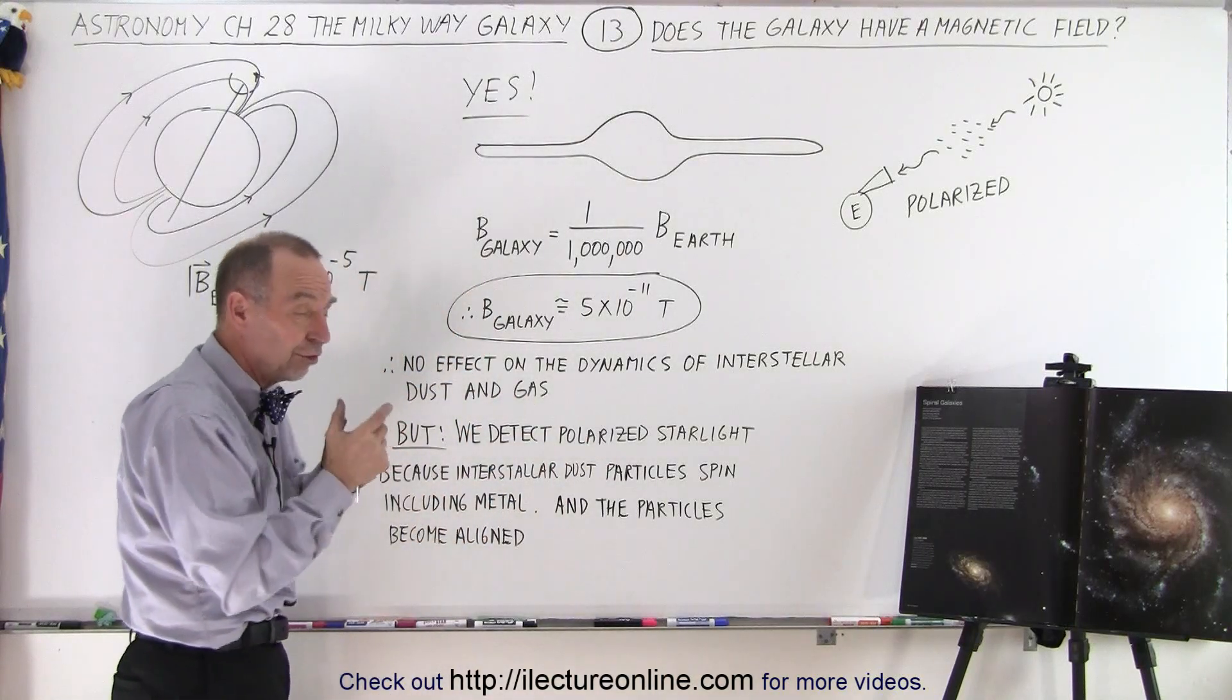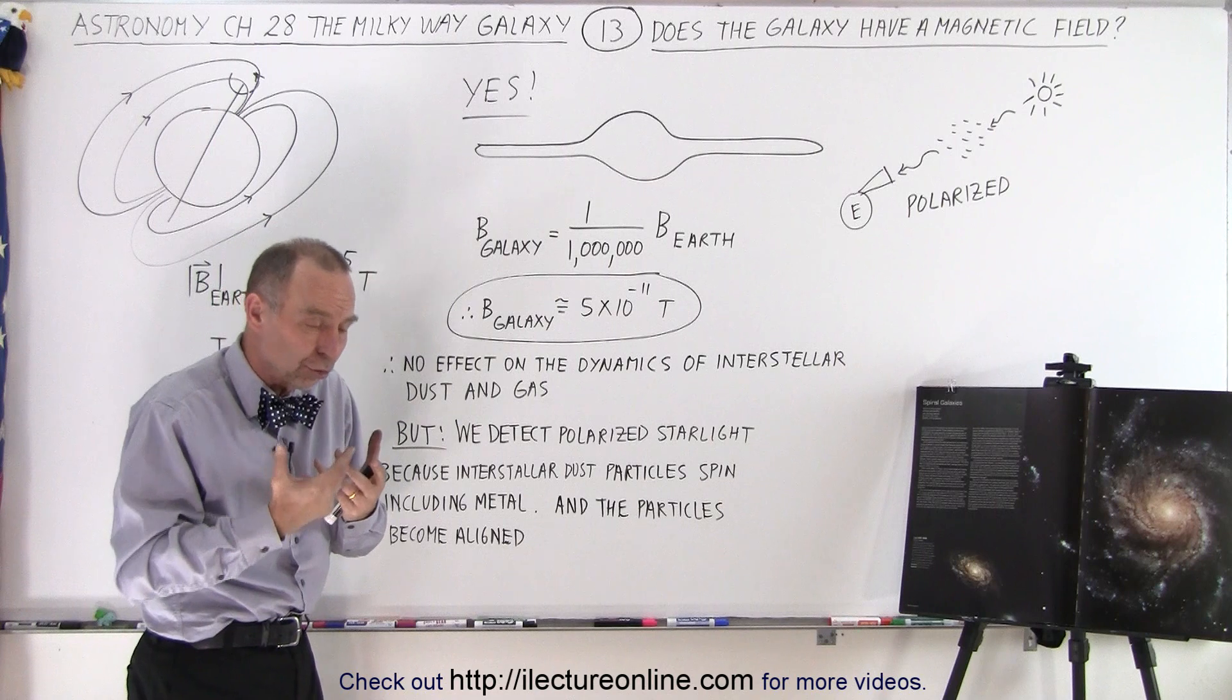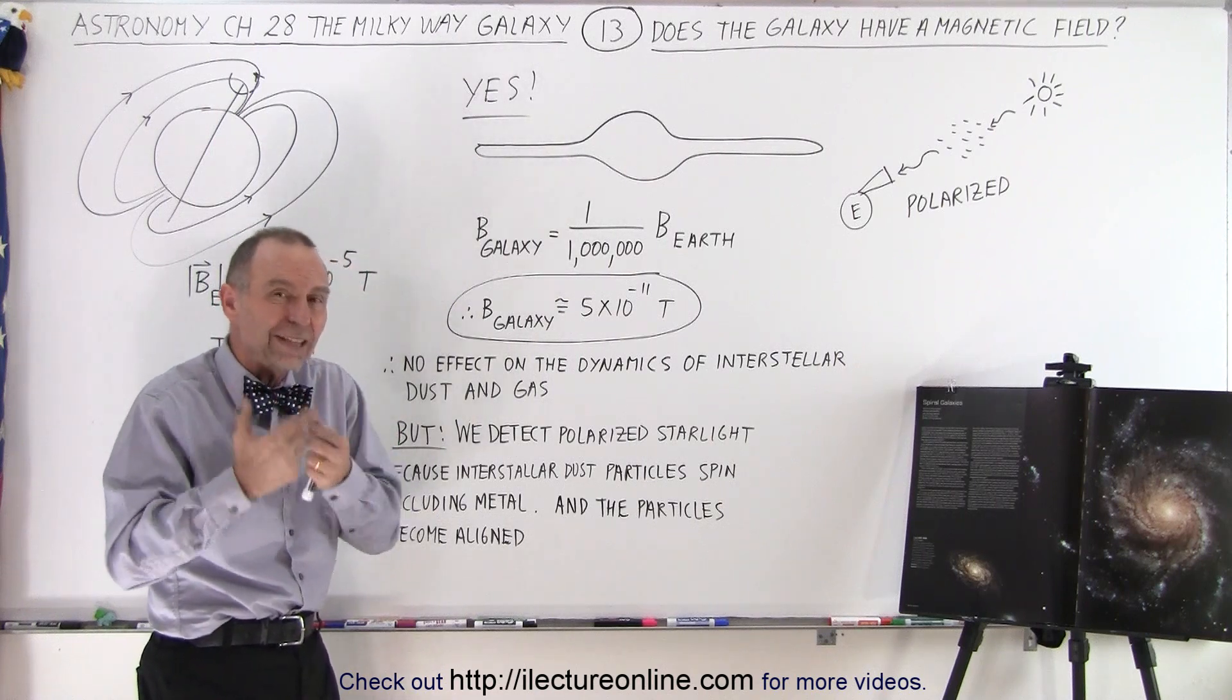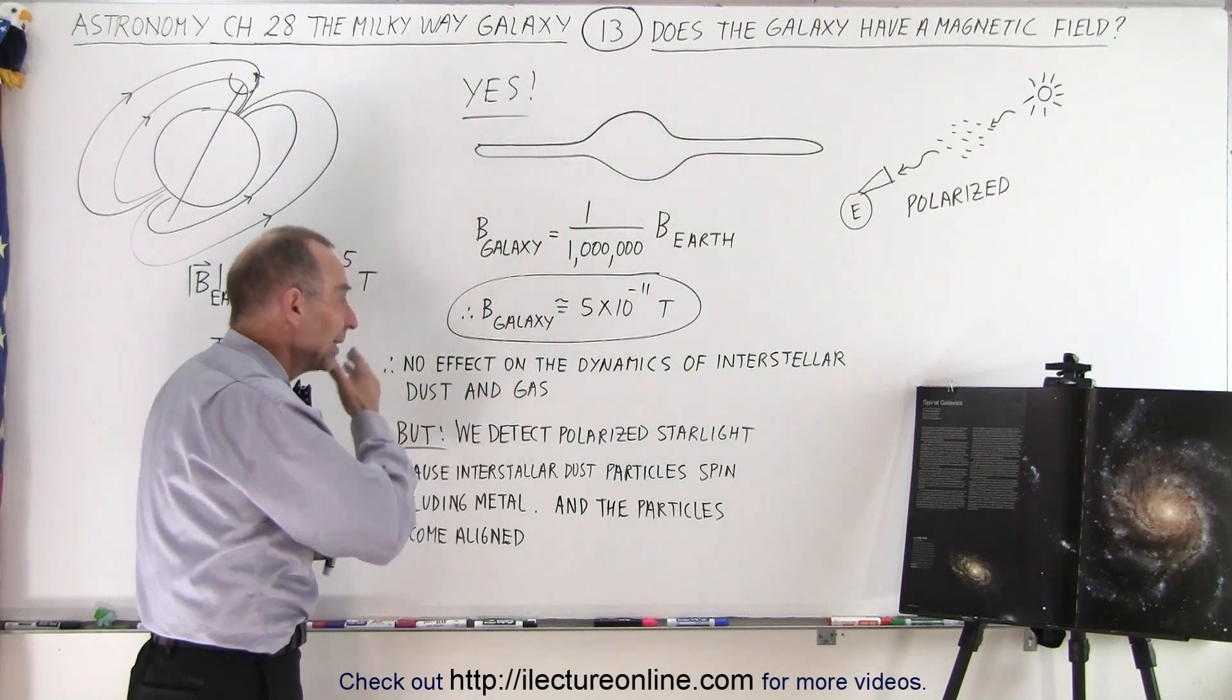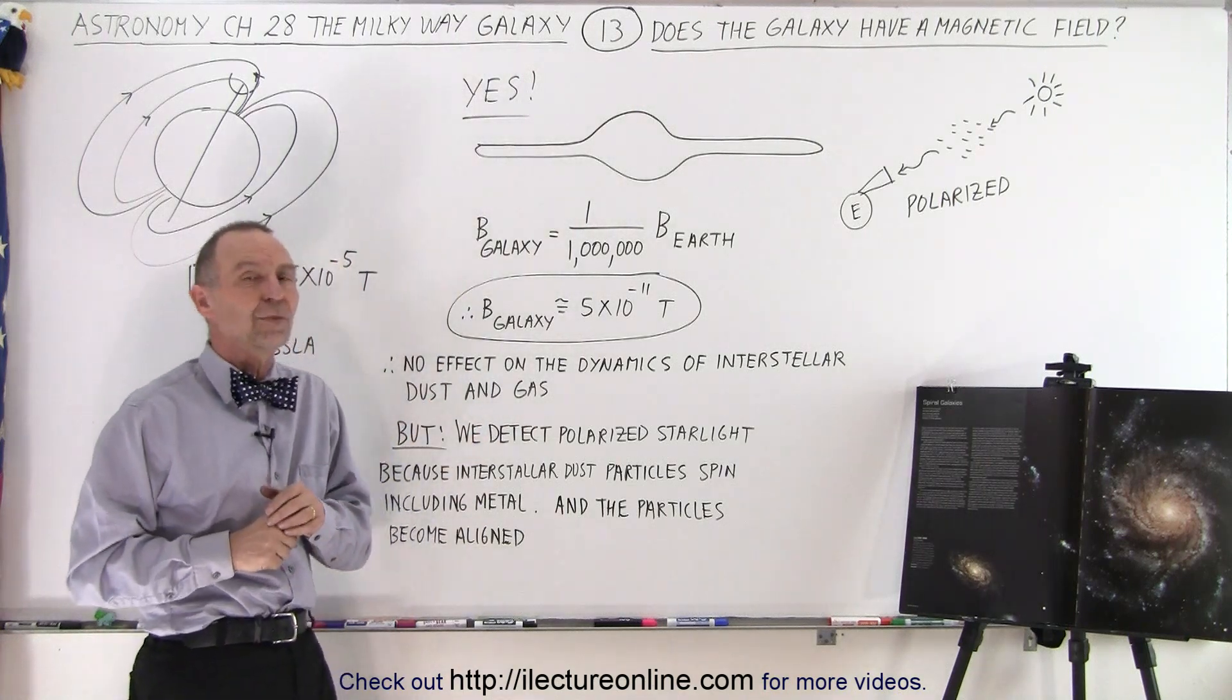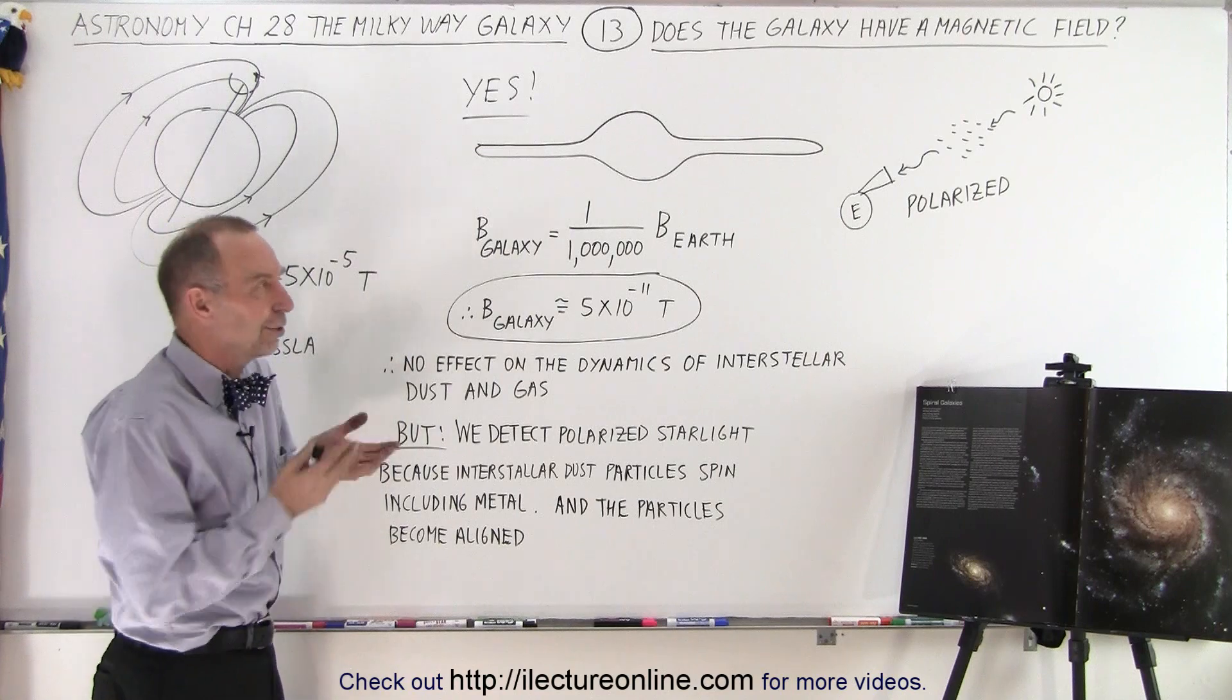And yes, because the interstellar dust particles do have rotational motion, that rotational motion does interact with the magnetic field that causes then the particles to align in such a way that it then causes the polarization. So we do see some effects of the magnetic field.